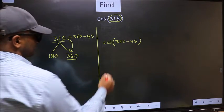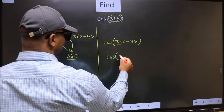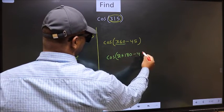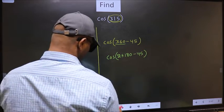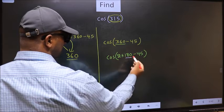Next, cos. In place of 360, we should write 2 × 180 - 45. Here we have 180.